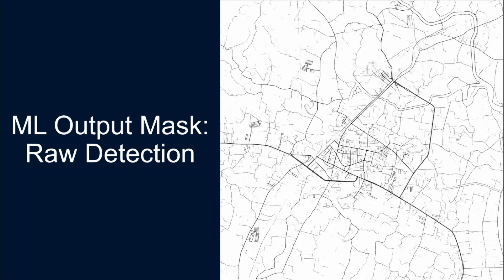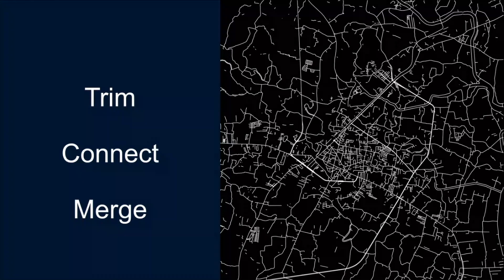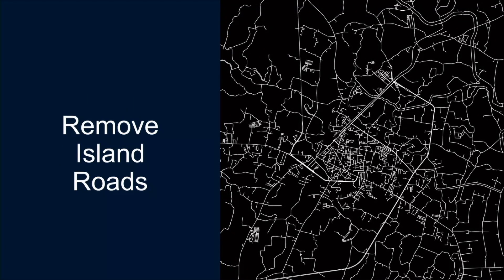The output of the mask is raster data — per pixel, not a map — and it has a lot of noise. So first there's a lot of post-processing. We take this result, do the threshold, extract the center line, and arrive at some sort of graph — a very noisy graph. Then we trim and connect the results, using a lot of graph techniques to make sure the graph is consistent. Then we drop the road islands, and this is basically our internal representation of the map of the area.